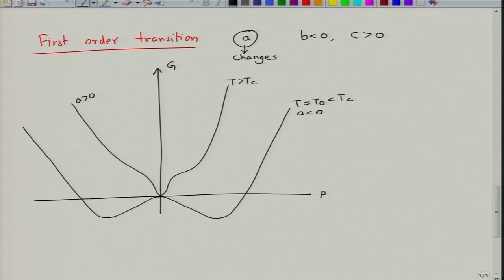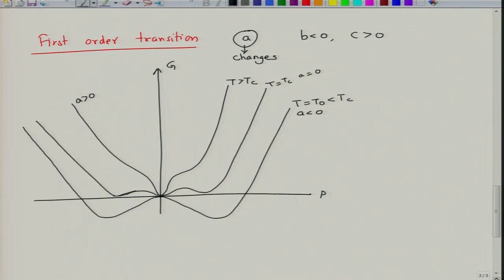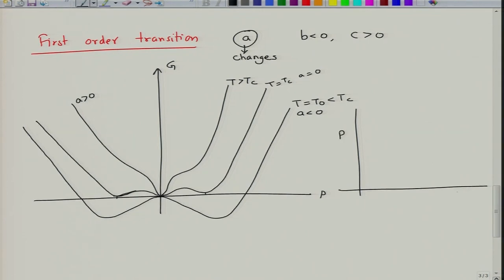At a lower temperature T equal to T0, which is less than Tc, A is negative. At Tc when A is equal to 0, we have a situation with 3 minima — 2 minima corresponding to the polar phase and 1 minimum corresponding to the non-polar phase. This means we have a non-polar phase in coexistence with the polar phase between temperatures Tc and T0. The polarization decreases and then goes abruptly to 0 at Tc.